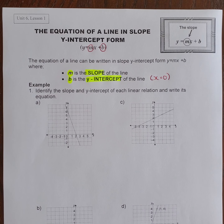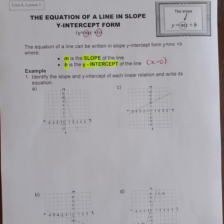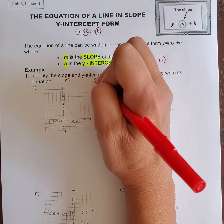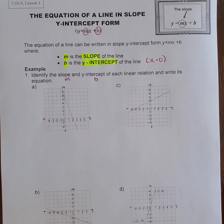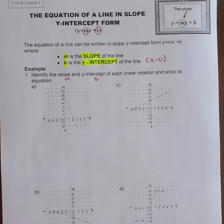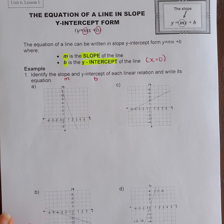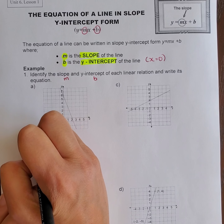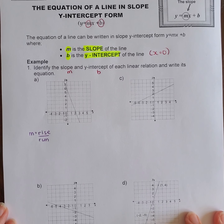Let's try some examples. Example one says: identify the slope and y-intercept of each linear relation and write its equation. Slope is our M and y-intercept is our B. Once you have these two quantities, you can put them together to form the equation of the line. For the first one, we're going to find our slope using rise over run, starting with the formula M equals rise over run.